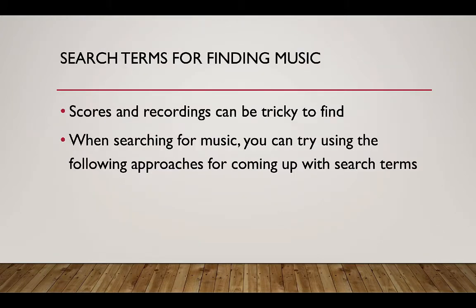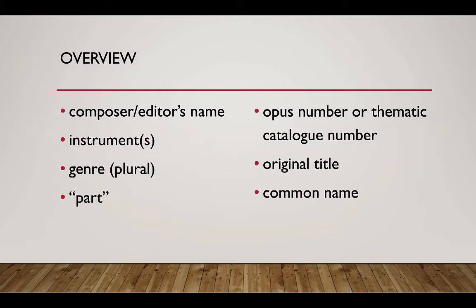Scores and recordings can be tricky to find. When searching for music, you can try using the following approaches for coming up with search terms: composer's or editor's name, instruments, genre, the word 'part', opus number or thematic catalogue number, original title, and common name.